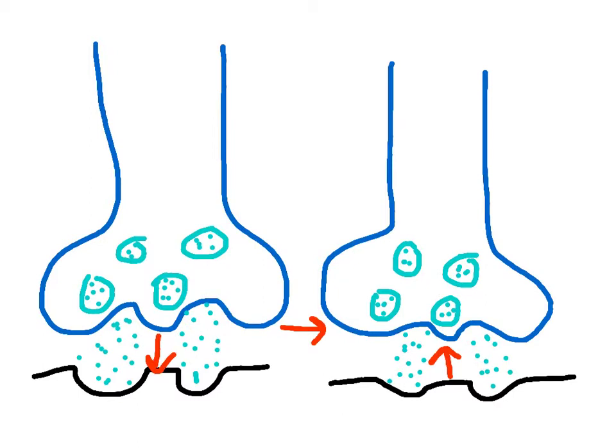As action potential happens, something called exocytosis occurs. This is when vesicles—these thingies here and here—are released out of the terminal buds just like this. Then reuptake is when these neurotransmitters are reabsorbed.